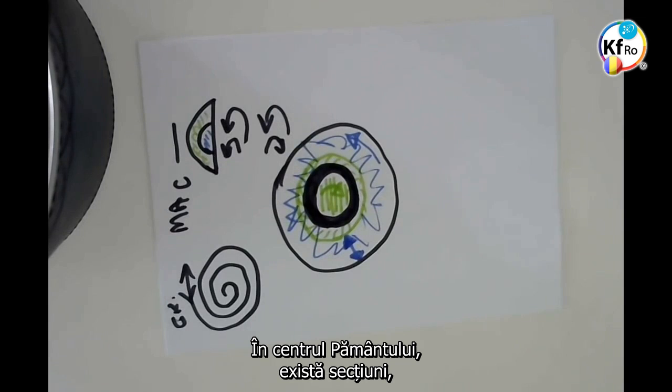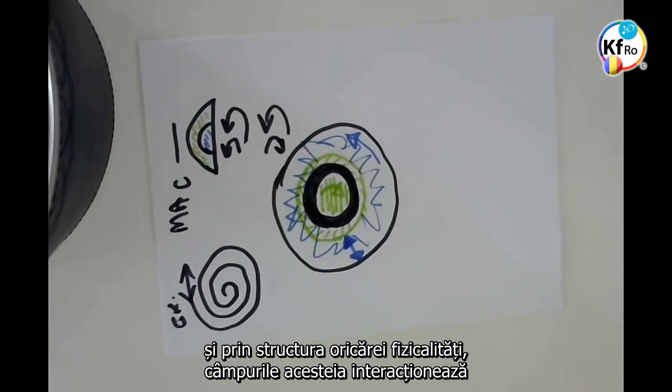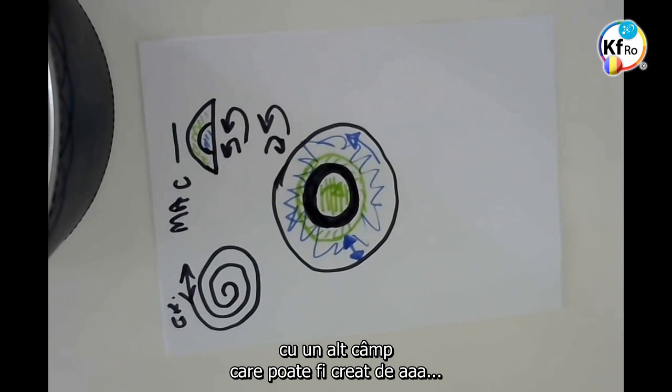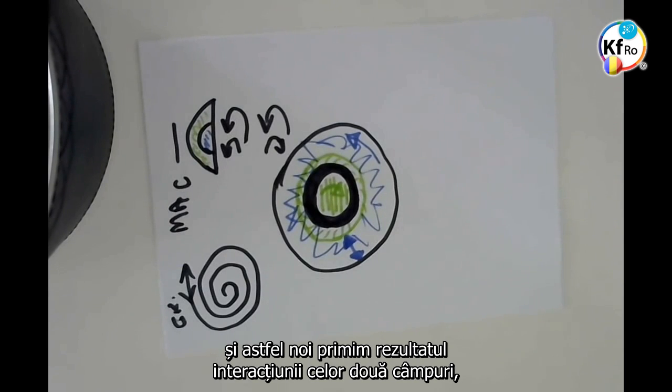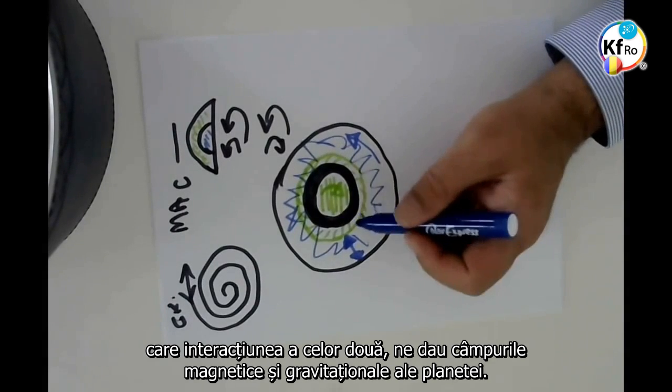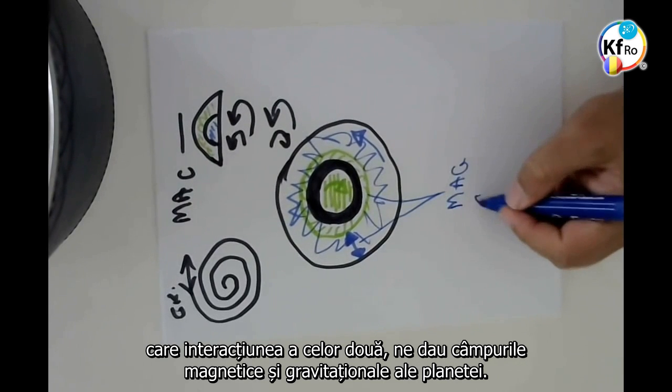In the center of the Earth, there is a section which creates its own Gravitational Magnetic Field. Through the structure or whatever physicality, its Field Strength interacts with another Field Strength which could be created by part of the outer core or the lower of the physical structure of the Earth. And so we receive the interaction of the two Fields which gives us the Magnetical and the Gravitational Fields of the Planet.